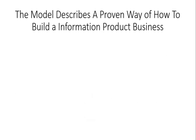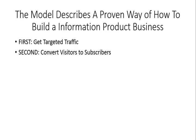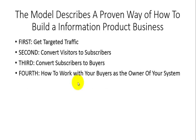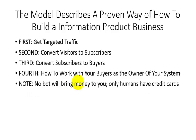This model describes a proven way to build an information products business. First, it's going to be based on getting targeted traffic. Then it's based on converting those visitors to subscribers, then converting those subscribers to buyers. It's also based on you as the owner of the system working with your buyers — not just as an affiliate or someone who has generated a lead, but as the owner of your system. No bot or automated process is going to bring money to you. Only human beings have credit cards, and if you can provide value on a consistent basis to people that you focus on, you're going to be able to generate a significant income.